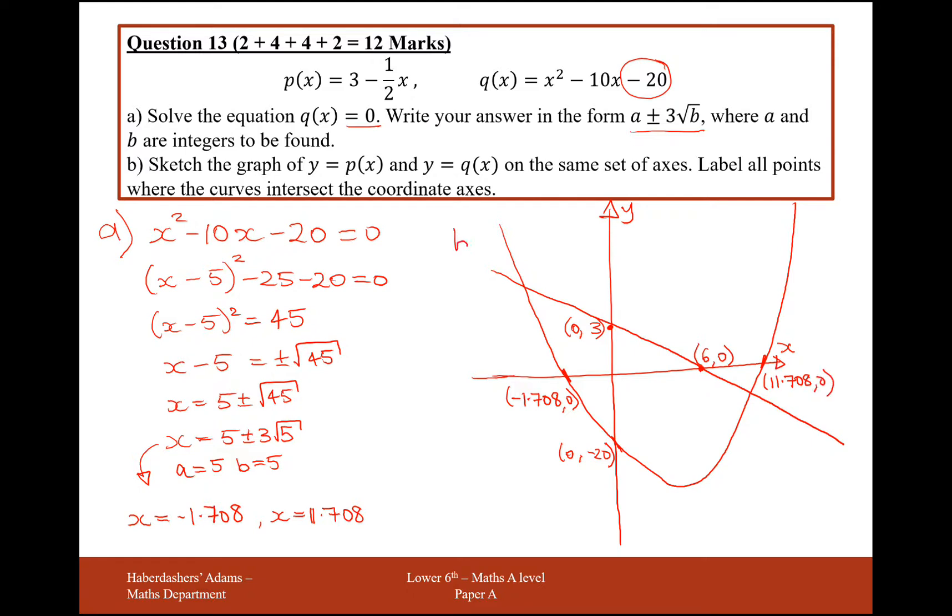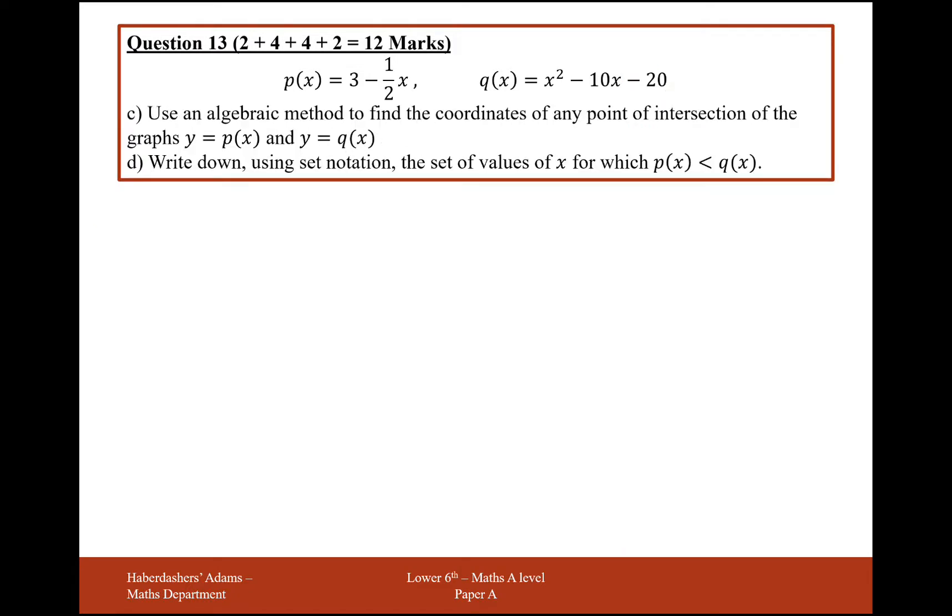So that's part B done. Let's move on now to part C. Use an algebraic method to find the coordinates of any points of axis and intersections of y equals px and y equals qx. So if we want these two to have intersection points, what we do is we set the equations equal to each other.